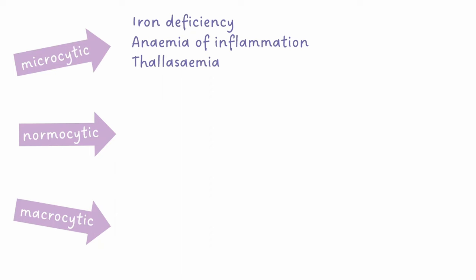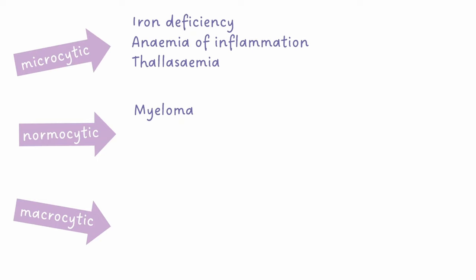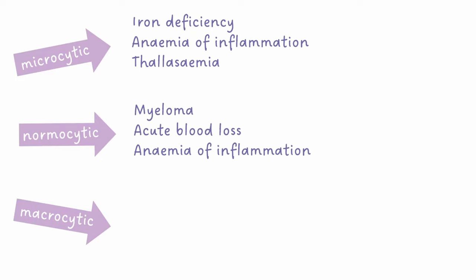Normocytic anaemia can be caused by myeloma, which is a bone marrow cancer that results in pancytopenia, meaning red cells, white cells, and platelets are all low. It can also be caused by acute blood loss and anaemia of inflammation.